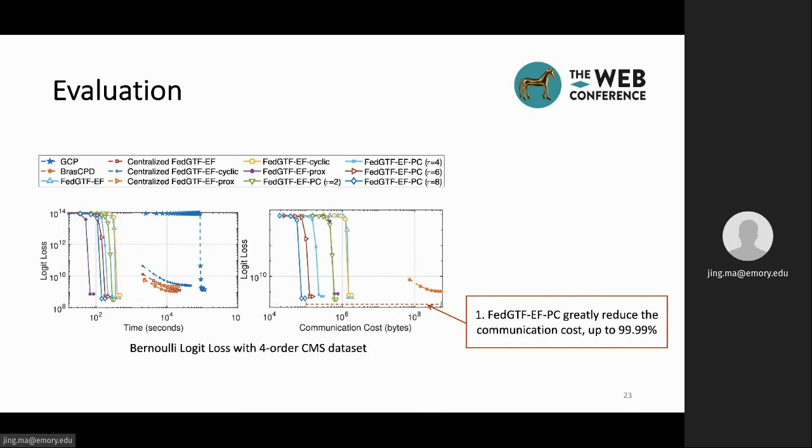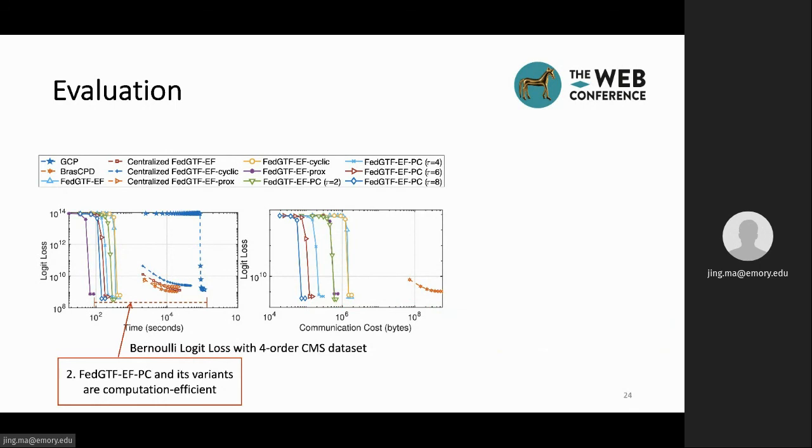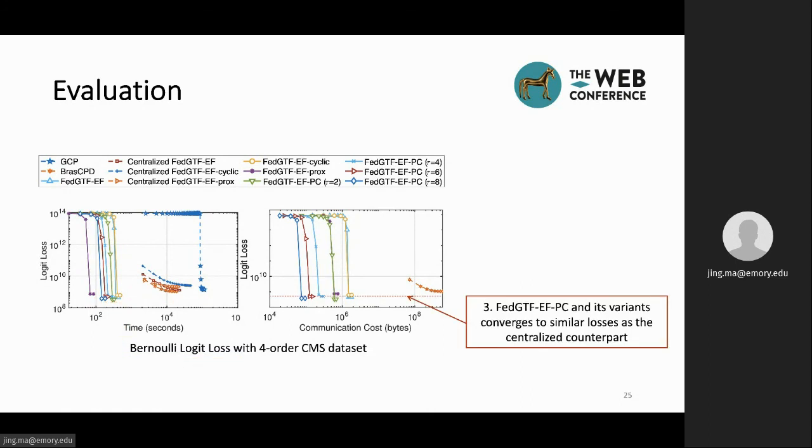We have three main observations based on the experiment results. First, FedGTF-EFPC and its variations can greatly reduce the communication cost. The most reduction on the communication cost is 99.99% when we set the number of local update rounds to 8. Second, FedGTF-EFPC and its variants are computationally efficient due to the fiber sampling technique. Last but not least, FedGTF-EFPC and its variants converge to similar losses as the centralized counterparts, which indicates that communication efficiency can be achieved without sacrificing the factorization quality.